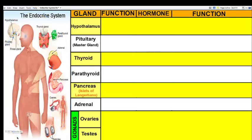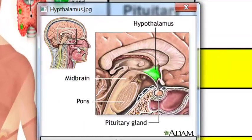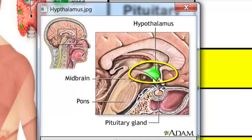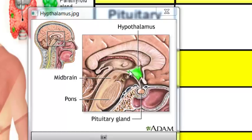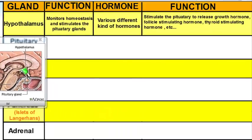The first gland I want to talk about is located inside the brain. If we cut the brain in half and looked inside, we would see the hypothalamus located in this green area. The hypothalamus is the part of the brain that monitors homeostasis, and as a result it produces various kinds of hormones.